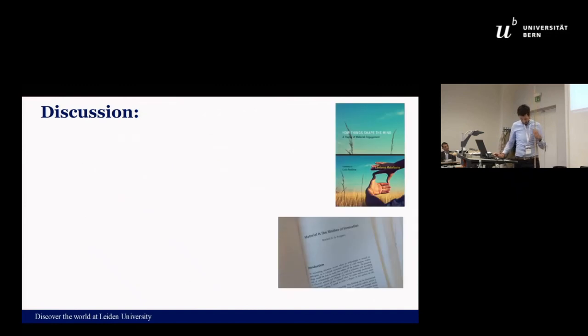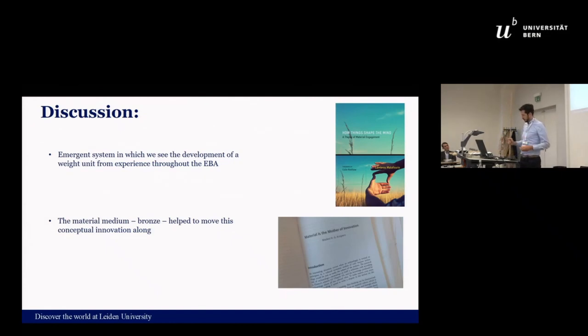And then the last, the most tentative point that I would like to make is that we think this is an emerging system in which we see the development of a weight unit from experience. This comes back to the theory that I mentioned in the beginning. It basically argues from experience people came to expect that rings weigh about the same, so around 195 grams, resulting in a cognitive stereotype of these rings and their weight. A cognitive stereotype is part of our cognitive toolbox. From this, the notion of weight could be divorced from the actual physical ring and thought of separately. So it's in a way thanks to the particular affordances of bronze that equality in weight became a matter of concern and a cognitive tool to think with, resulting in an abstract notion of weight.